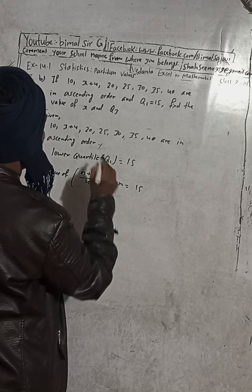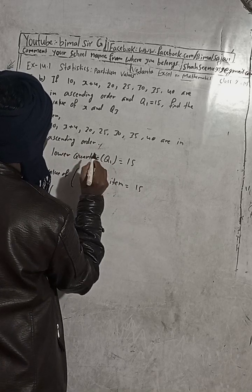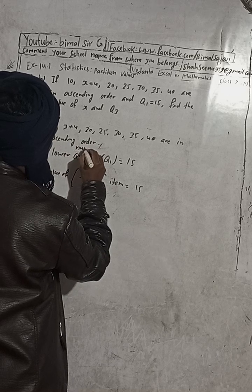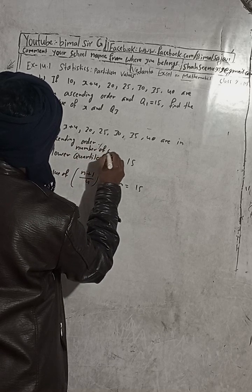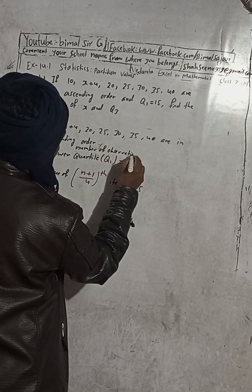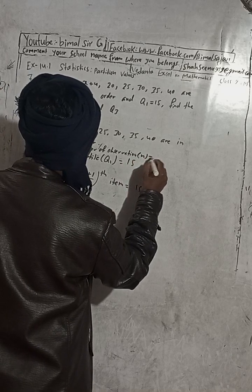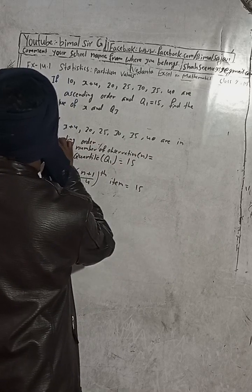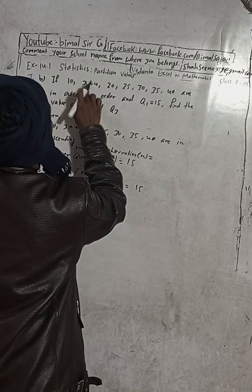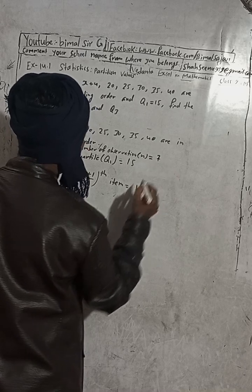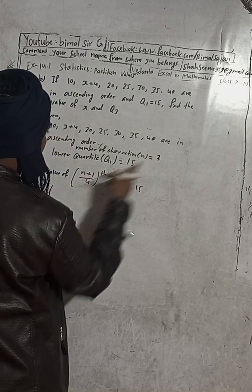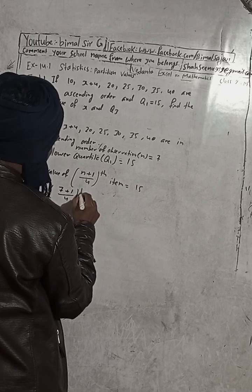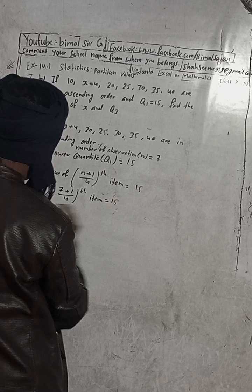The number of observations n is equal to 7. Now putting n=7 into the formula: (7+1)/4 = 8/4 = 2. So the 2nd item is equal to 15.